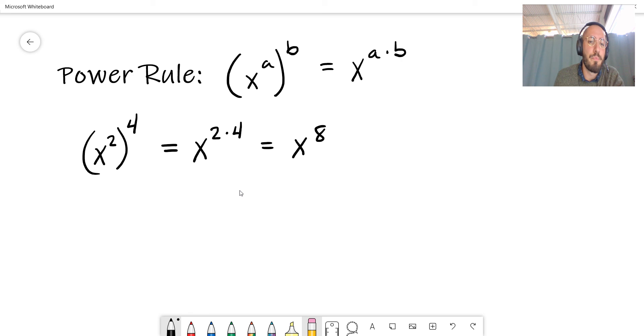So let's illustrate why. With our original expression here, x squared to the 4th, this is really the same thing as x squared multiplied by itself 4 times, right? 4 times.